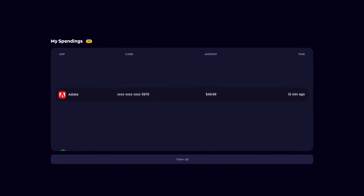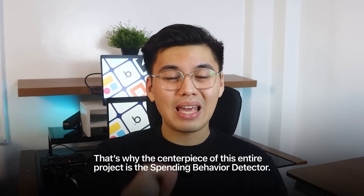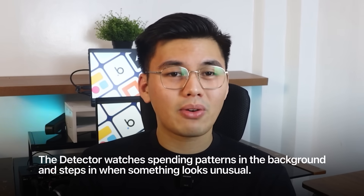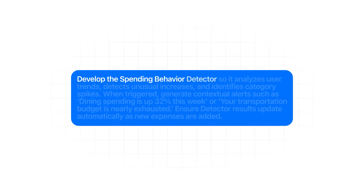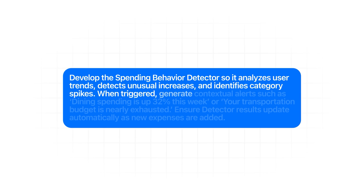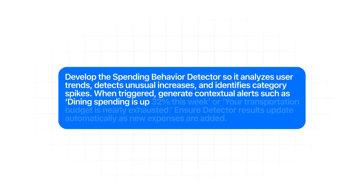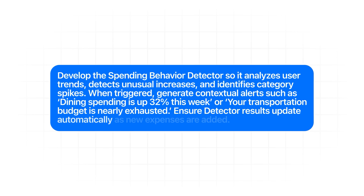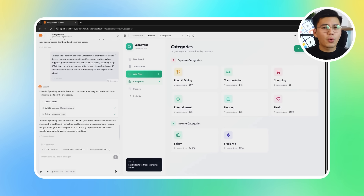Every budgeting app logs expenses, but what people really need is something that helps them notice their habits — especially the ones that quietly drain money without them realizing it. That's why the centerpiece of this project is the spending behavior detector. I don't want users to dig through charts or totals. The detector watches spending patterns in the background and steps in when something looks unusual. Here's the prompt: develop the spending behavior detector so it analyzes user trends, detects unusual increases, and identifies category spikes. When triggered, generate contextual alerts such as 'dining spending is up 32% this week' or 'your transportation budget is nearly exhausted.' Ensure detector results update automatically as new expenses are added.